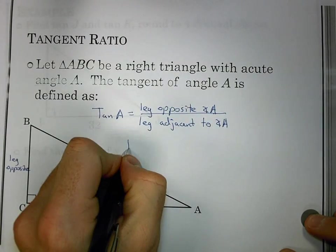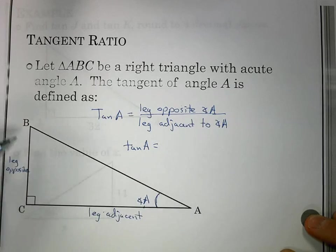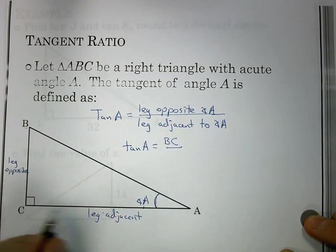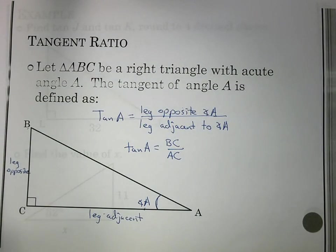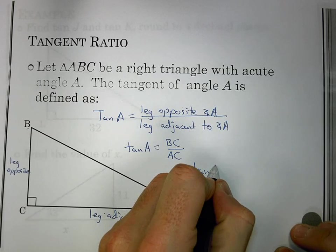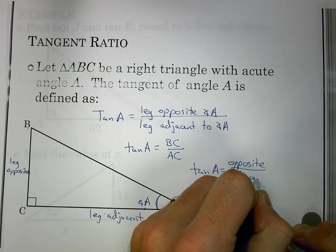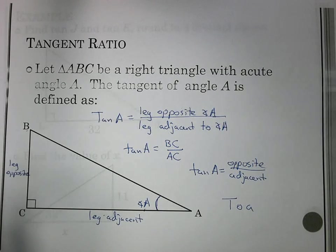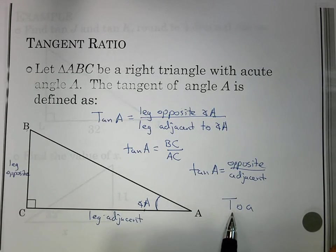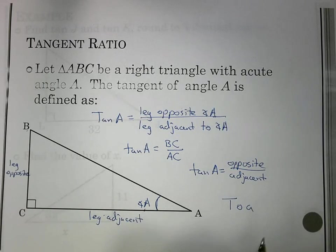In this triangle, tangent of A is going to be BC over AC. Let's shorten it up and make a general term. The tangent of an angle is the opposite over the adjacent. For right now, we're just going to think of that as TOA. That tells us tangent opposite adjacent, just to give us some way to remember it.